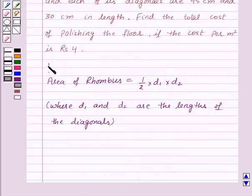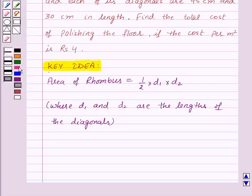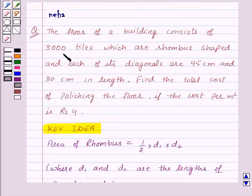This is the key idea for this question. Now let's see its solution. In the question we are given that the floor consists of 3,000 tiles which are rhombus in shape, and the diagonals of one tile are 45 centimeters and 30 centimeters in length.